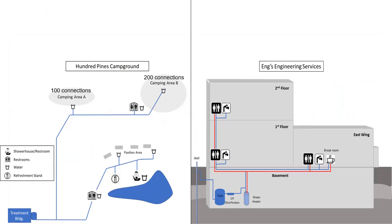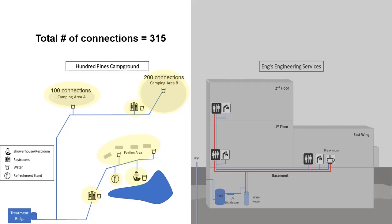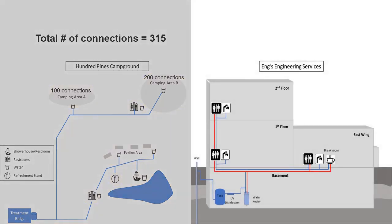Let's look at two examples to clarify how to determine the number of connections at a non-community water system. A campground may have a connection going to each campsite, each restroom or shower facility, office or refreshment stand, and pavilion or other recreational building. In our example, Hundred Pines Campground may count up a total of 315 connections. A business or school, on the other hand, may only have one connection to the system. For example, Eng's Engineering Services consists of just one building, so it has only one connection.